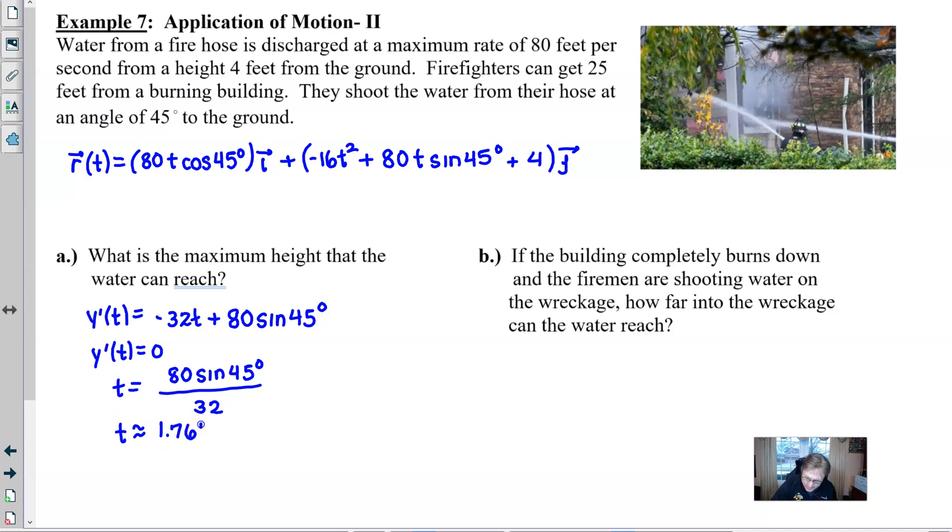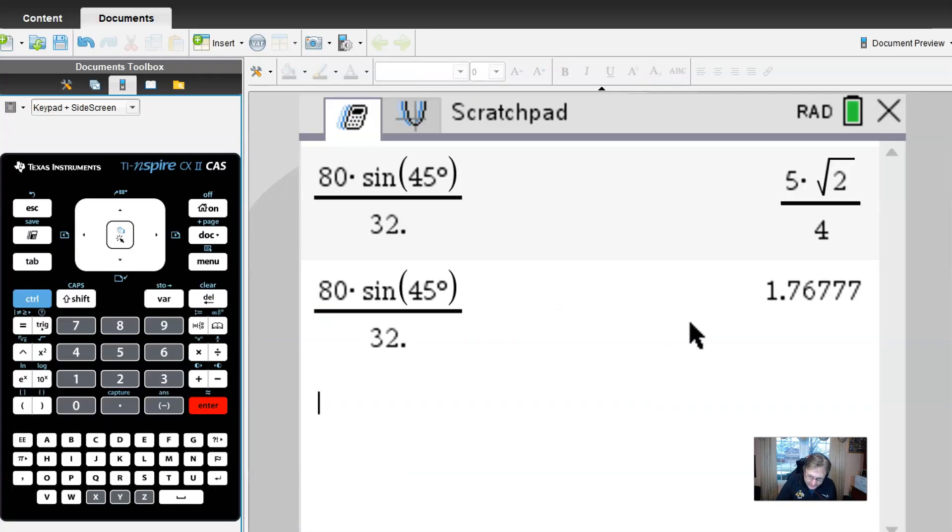And that is the time at which we reach our highest point. Much like the previous problem, we had computed the time that the baseball would reach its highest point. Now, if we want to know what is that height going to be, then we just merely need to enter the 1.767 into our y function and calculate that. So I'm going to go back to the calculator, and I am going to define that y of t, because I got a feeling we're going to use it perhaps even a second time here.